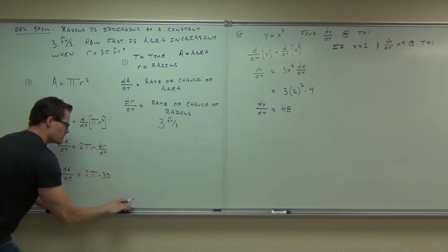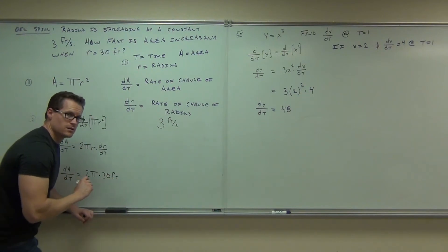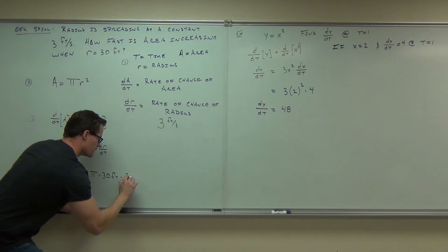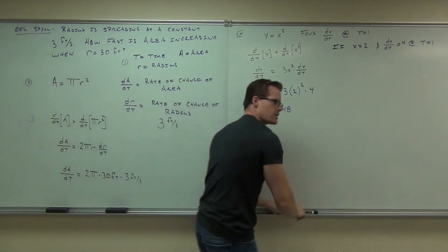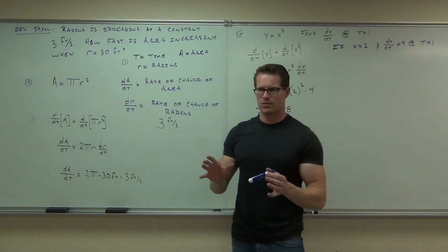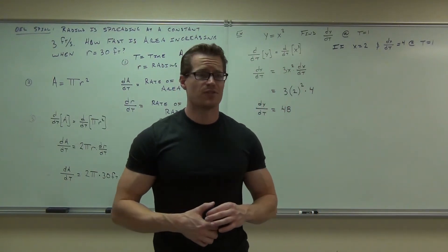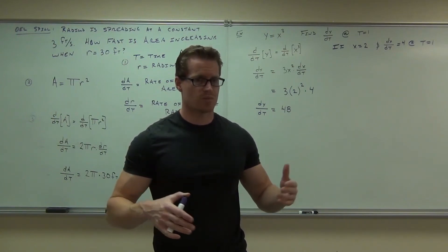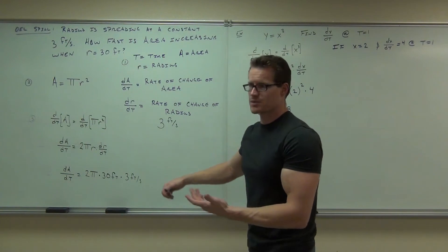I'll use the units so you see it. 30 feet times 3 feet per second. Why am I showing you this? Well, we should end in an area, right? Can I say the area is increasing at 15 feet per second? No, because that would be linear. Area should be in square feet, right? Are we going to get square feet? Absolutely.